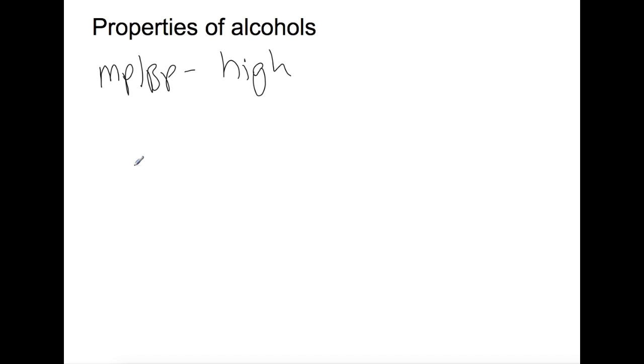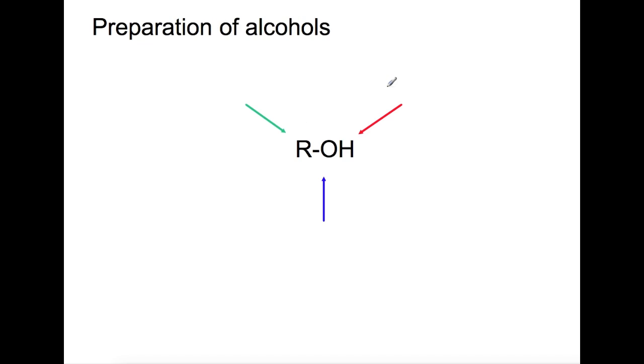Alcohols can be prepared in a number of ways. The first way we're going to look at is through nucleophilic substitution. If you take a haloalkane and either KOH or NaOH in water, then you will produce an alcohol. Mechanisms for this can be found in my video on haloalkanes.